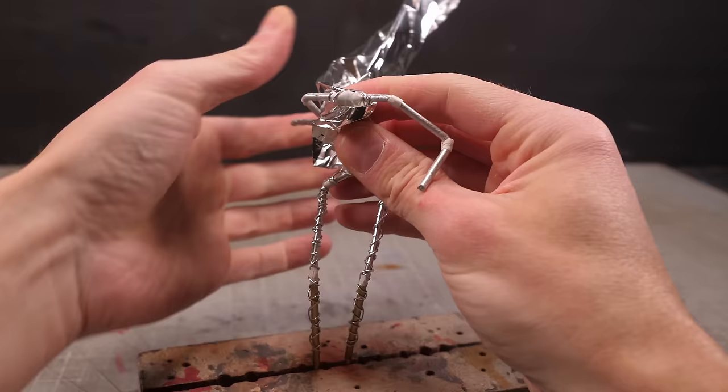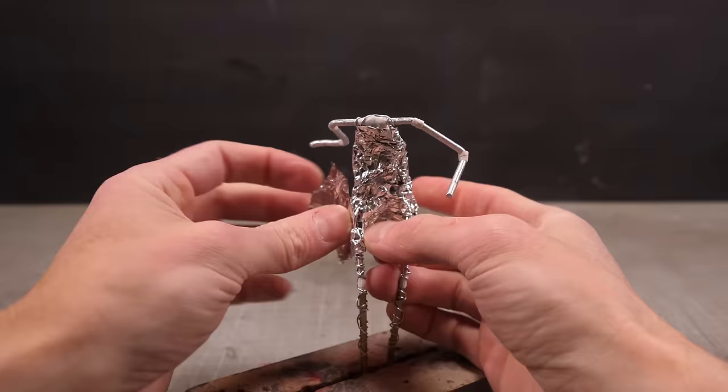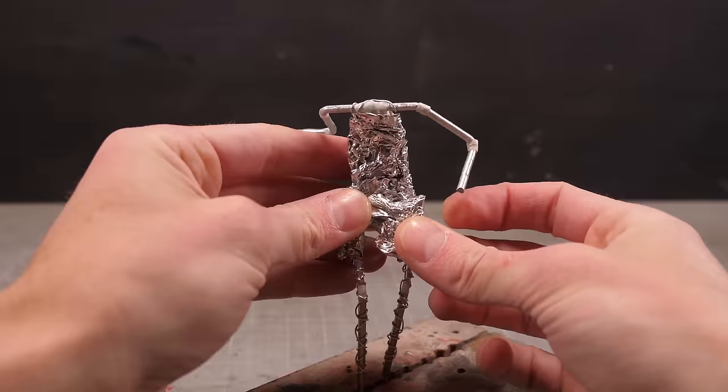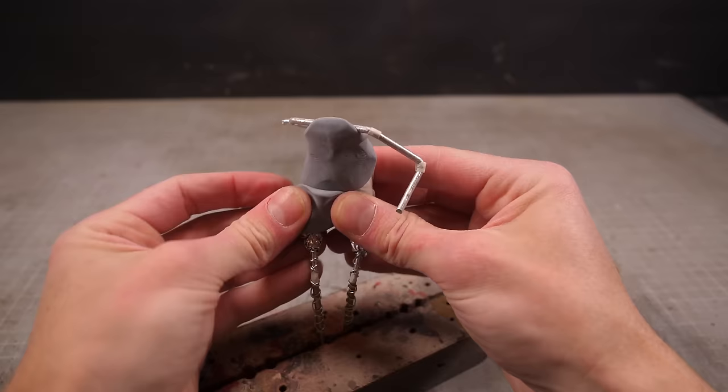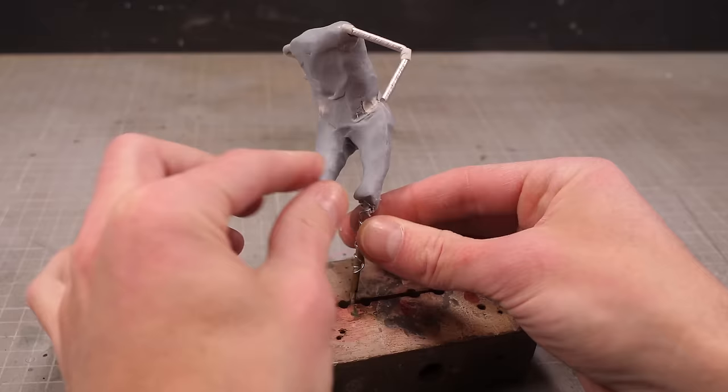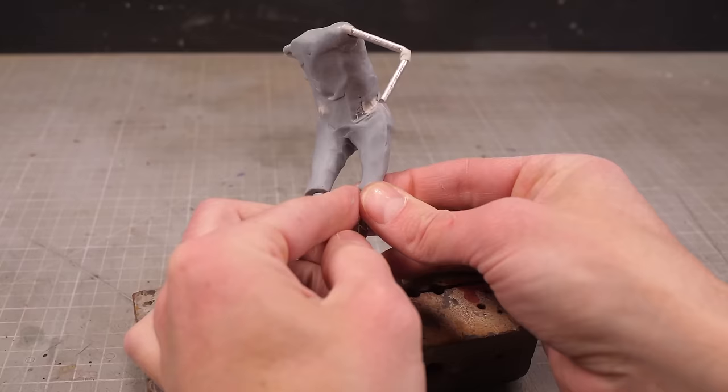I'm also going to try and bulk up as much of his body as I can with aluminium foil since I want to keep the weight to a minimum to reduce the stress on that single armature wire sticking out of the zombie's chest. Otherwise with the foil in place I can start to build up the initial bulky clay layer which I'll do in grey clay before making the rest of his body in coloured clay.